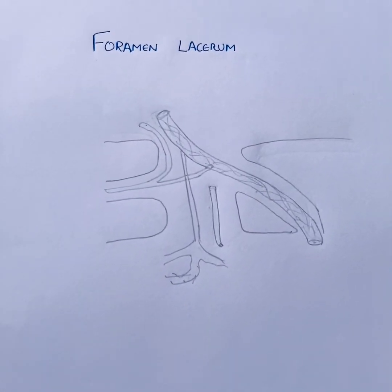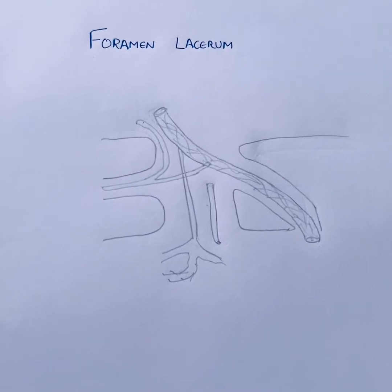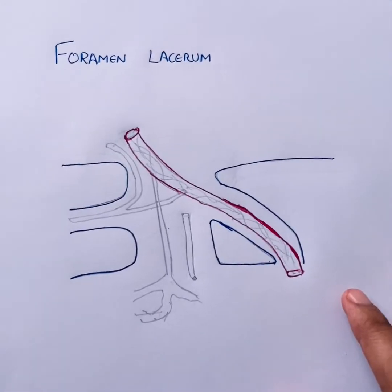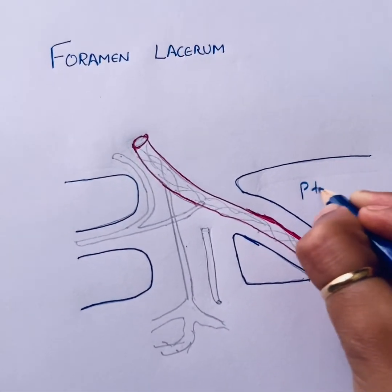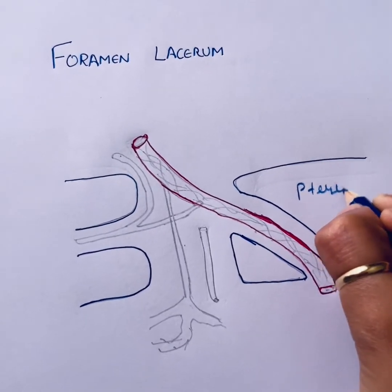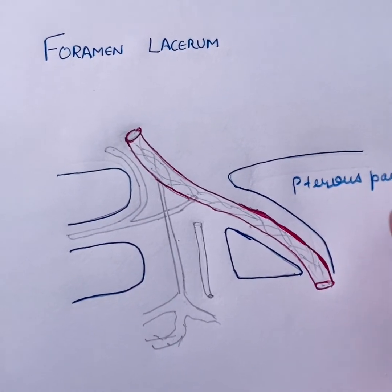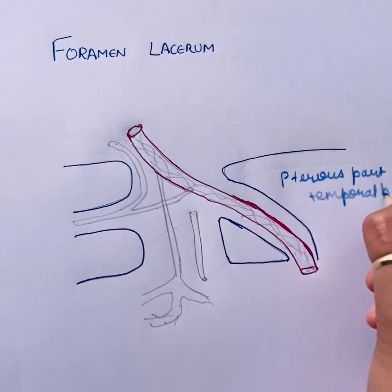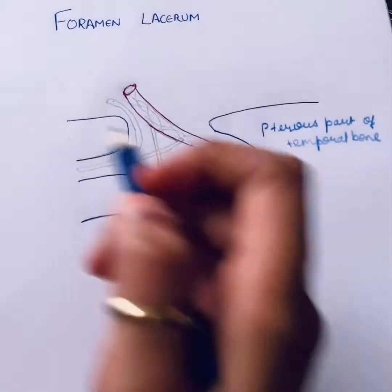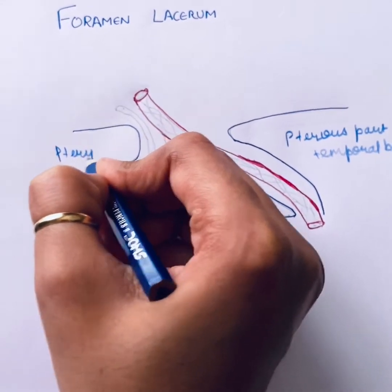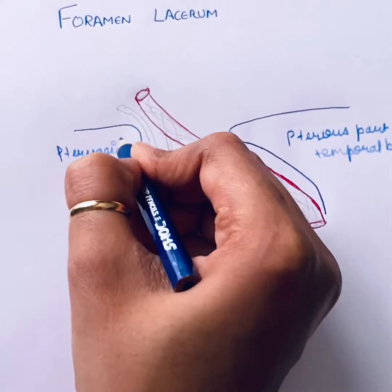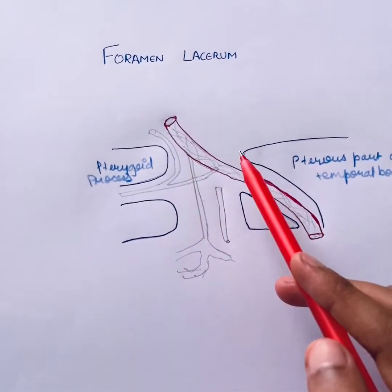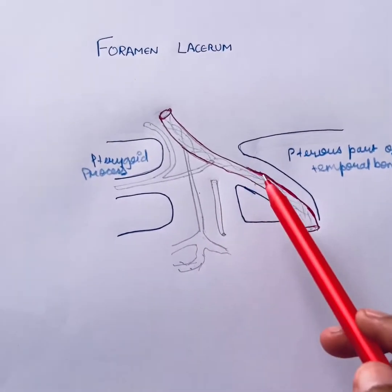Hello everyone, in this video we will talk about the content of foramen lacerum. We are viewing the superior view of the floor of the skull. This one is the petrous part of temporal bone, and this one is the pterygoid process.